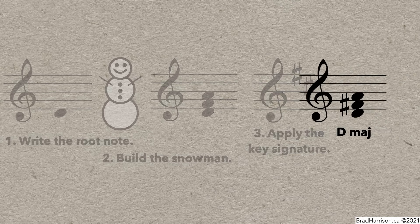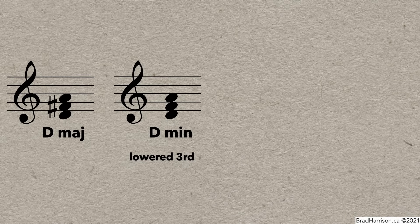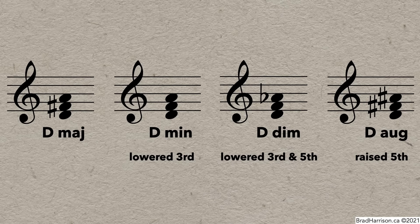Now we can modify it to make other triads. If we want to make it minor, we lower the third a semitone from F sharp to F natural. If we want to make it diminished, we also lower the fifth from A to A flat. And if we want to make it augmented, we start with the major version, but raise the fifth by a semitone from A to A sharp. And those are the four options for triads built on D.